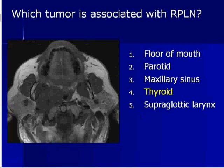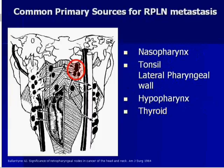It's a pretty good spread here. It's thyroid — it's the only one in this list. Common primary sources of lateral retropharyngeal lymphadenopathy metastases: number one is nasopharynx. The first nodal drainage echelon is the lateral retropharyngeal lymph nodes for nasopharyngeal carcinomas. Although tonsil cancers, hypopharynx, and thyroid cancers go to the cervical lymph nodes and thyroid also to the central compartment, they also go to the lateral retropharyngeal lymph nodes.